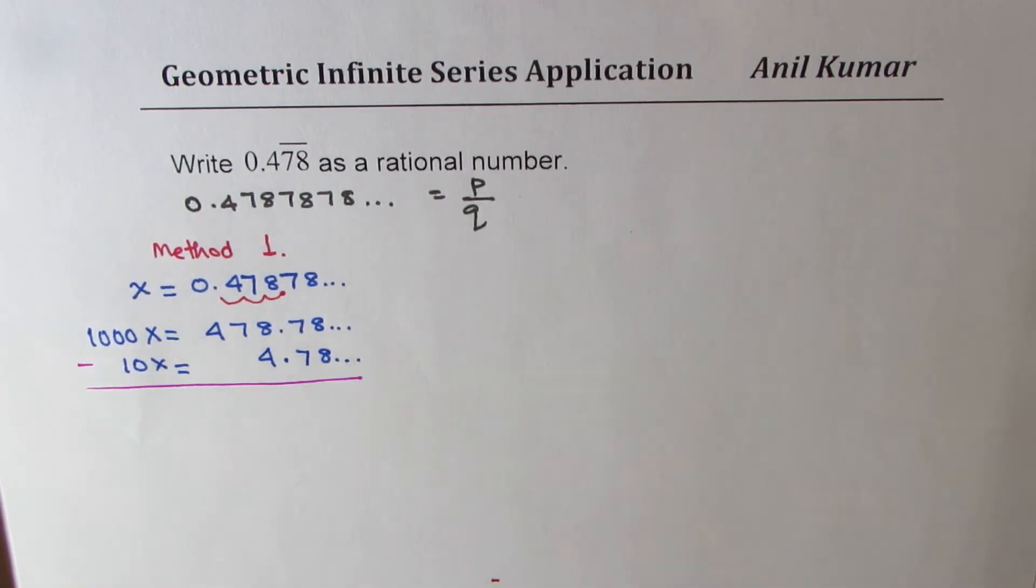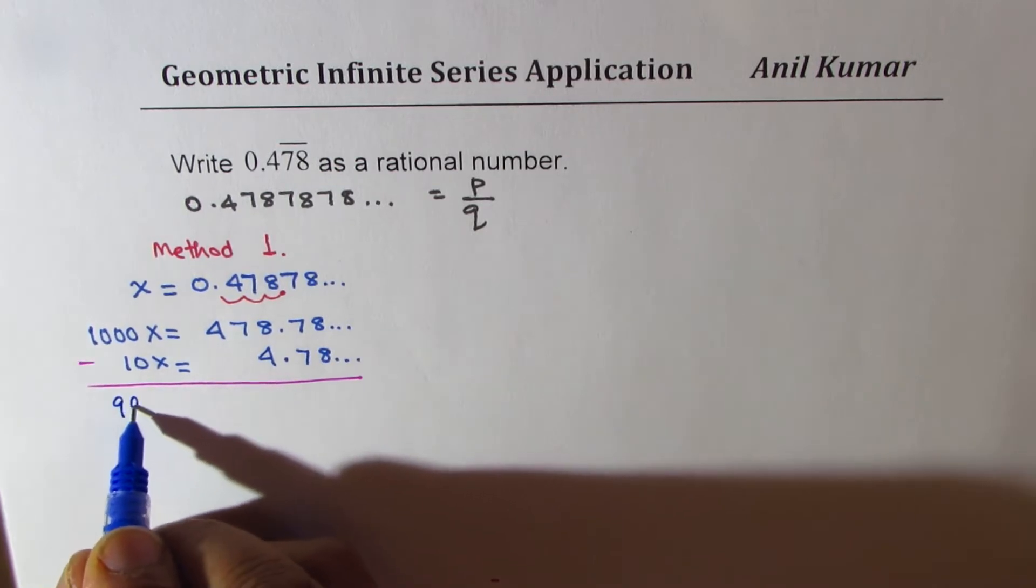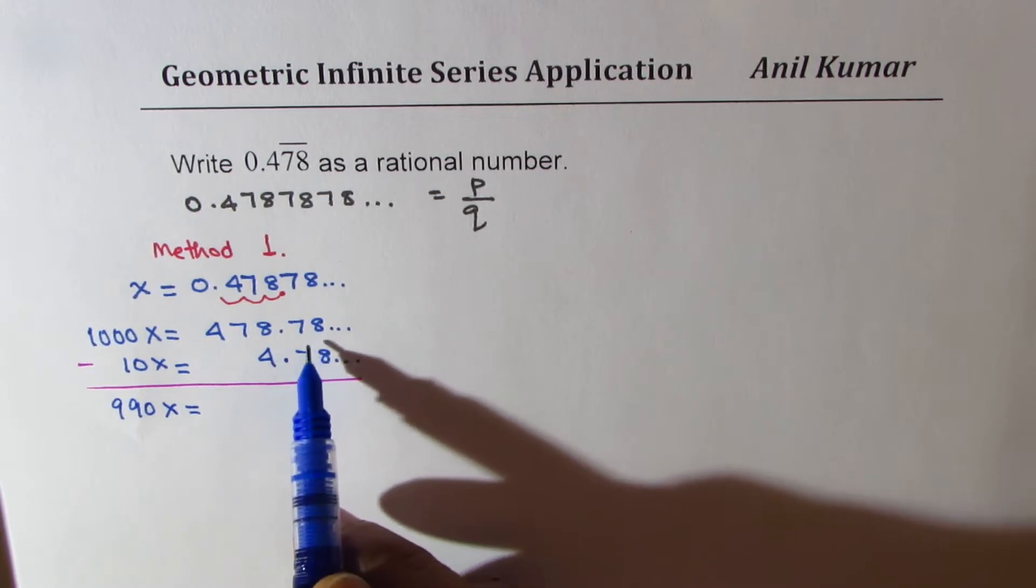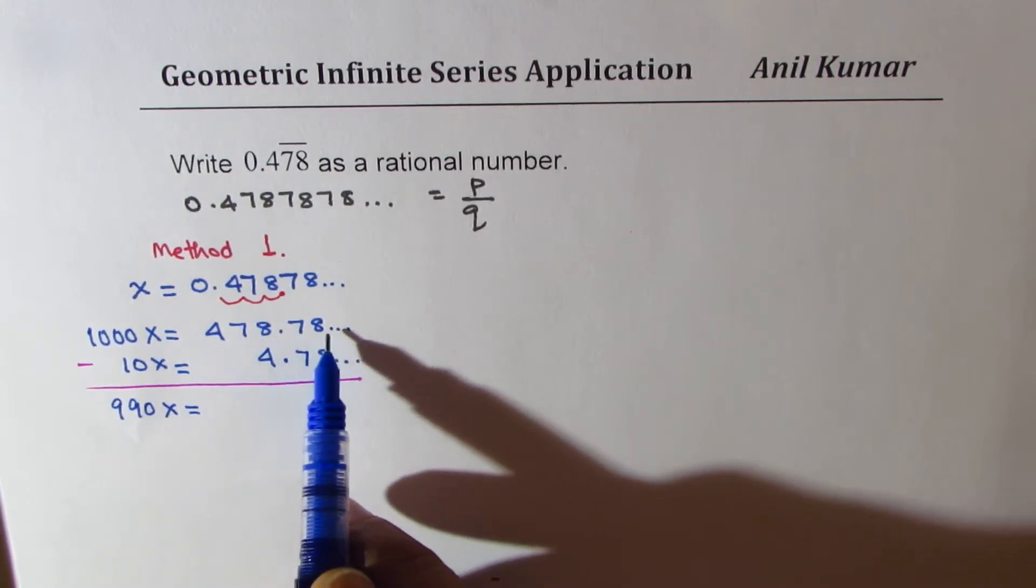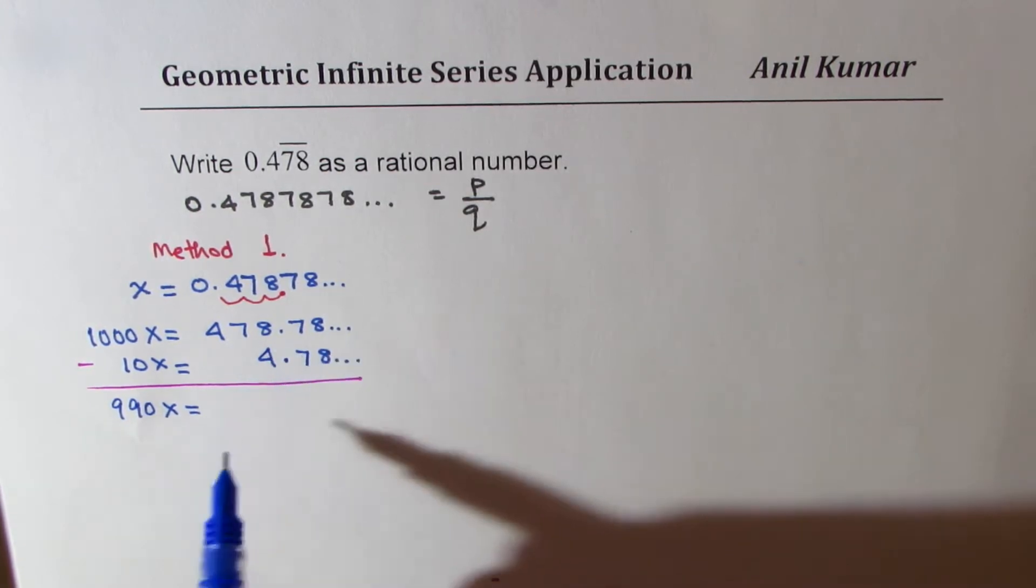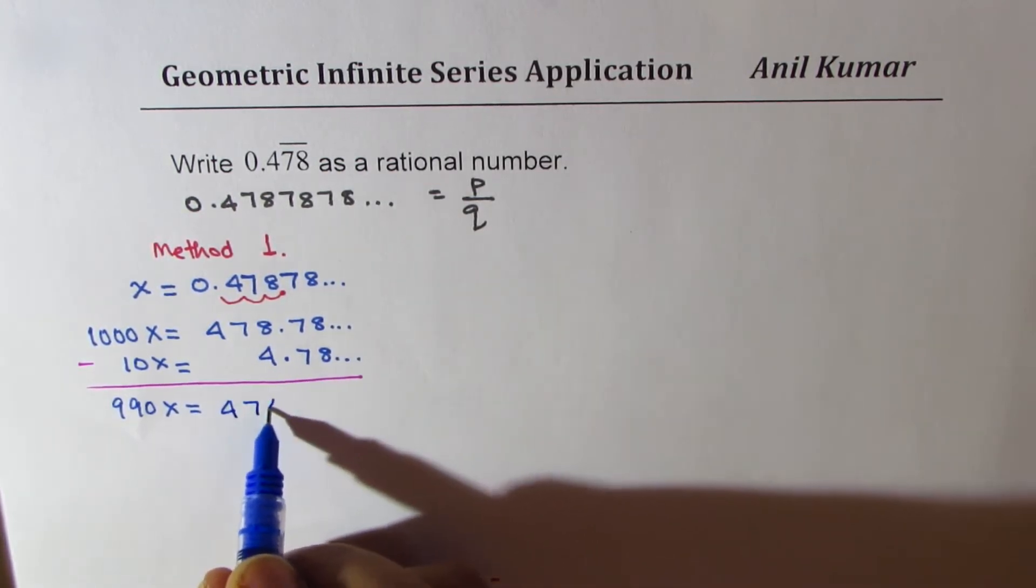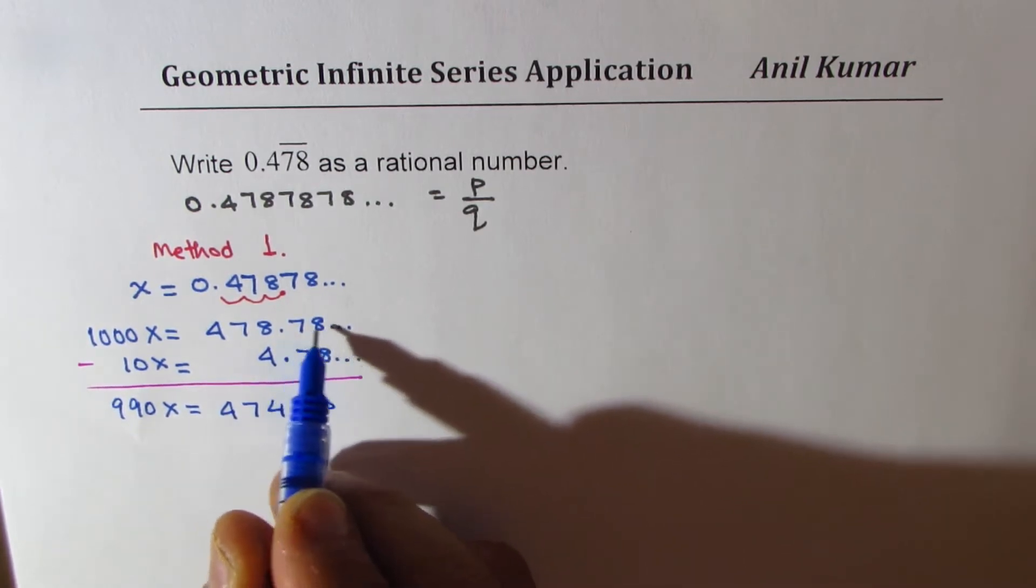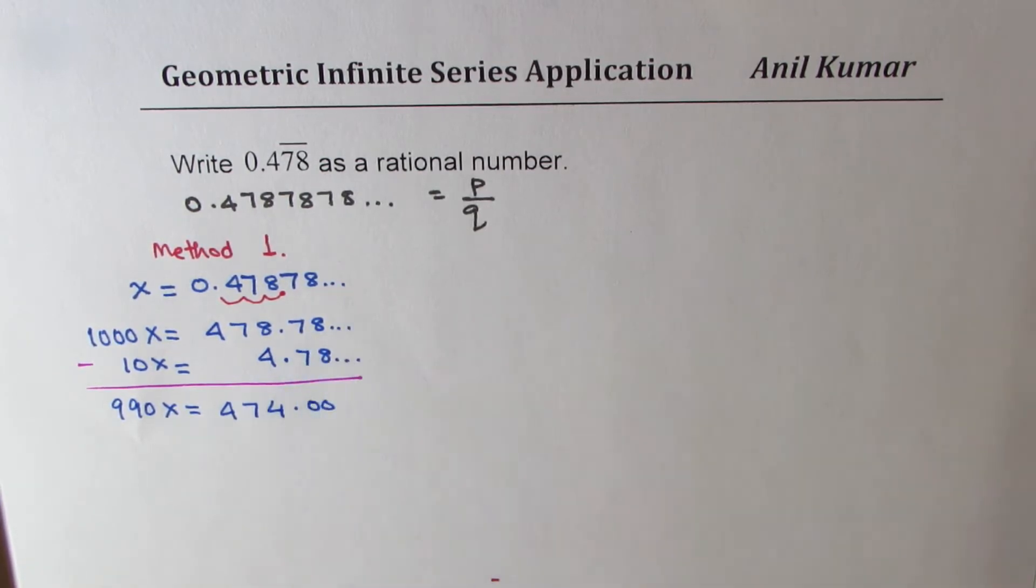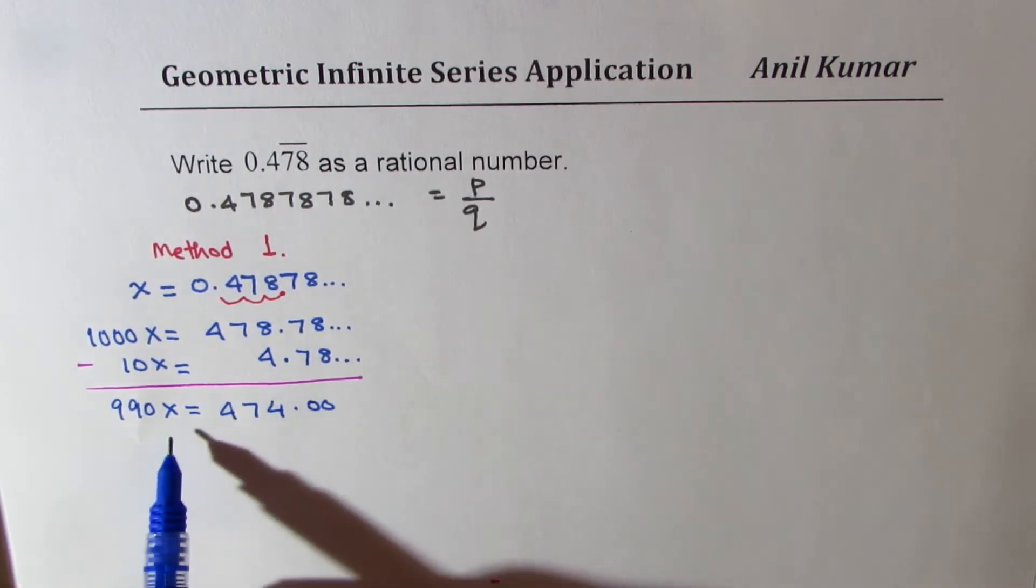Now if I take their difference, that is to say if I take away 10X from 1000X, then I get 990X, which equals 478.78 minus 4.78. We get 474. The 0.7878 recurring part cancels out.